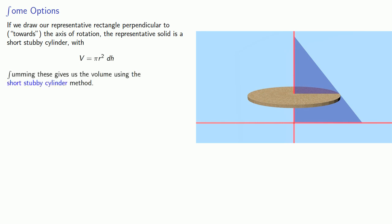Summing these volume elements gives us the volume using the short stubby cylinder method. Actually, nobody calls it the short stubby cylinder method, even though that's what it is. They invariably refer to this as the disk method.